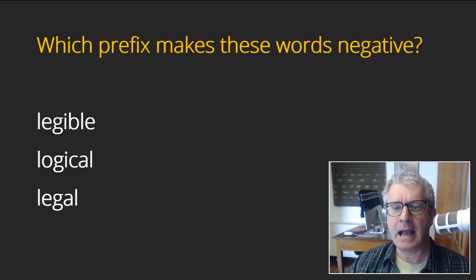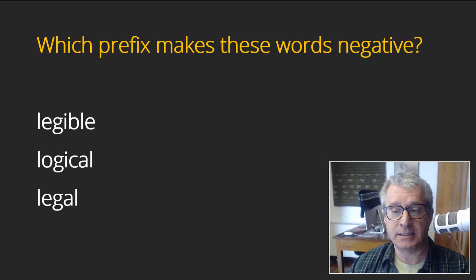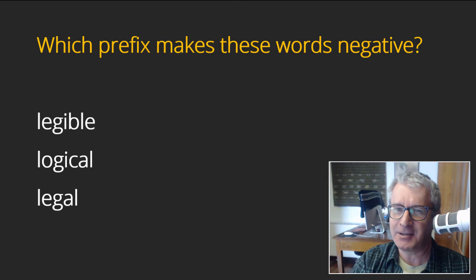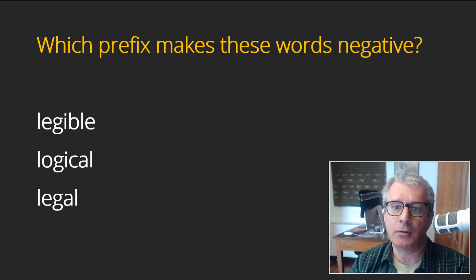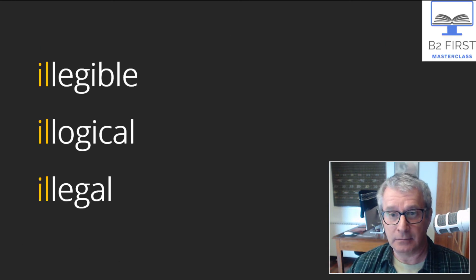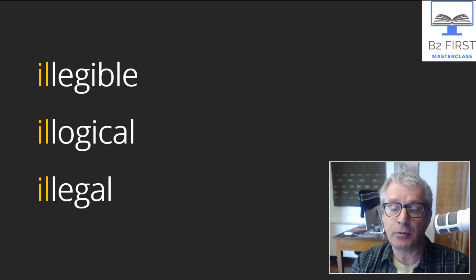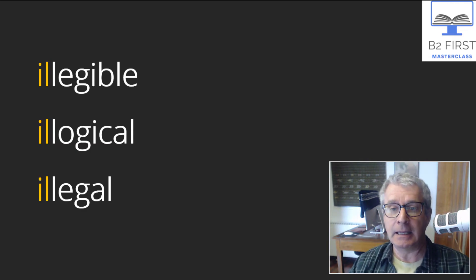Three more: legible—legible means you can read something. If your handwriting is not legible, what's the prefix? What's the opposite of legible? You can't read it. Logical—it makes sense, it's a logical explanation. And legal—anything to do with law. So the opposite is illegible, illogical, and illegal. Notice the spelling: double L.